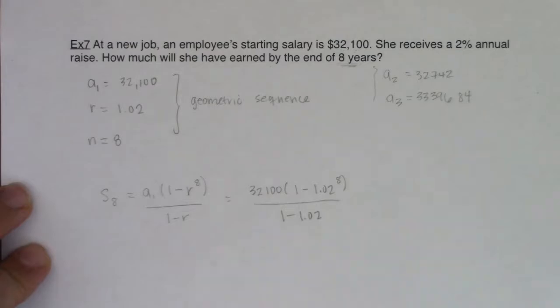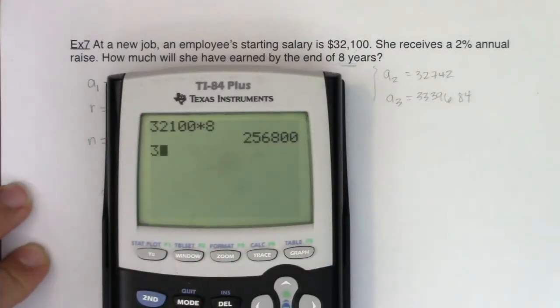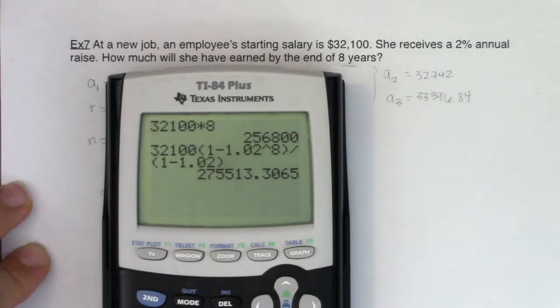Let's see what we've got here. So I'm going to do 32,100 times one minus, our r was 1.02 raised to the eighth. And then I want to divide that, in parentheses, one minus 1.02. And let's see what we get here. So we're getting that in the end, she's going to get about $275,513.31.